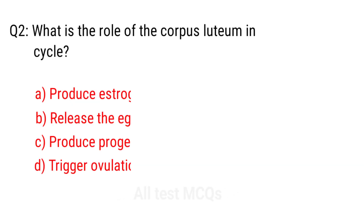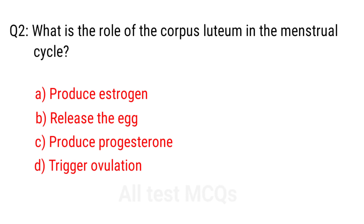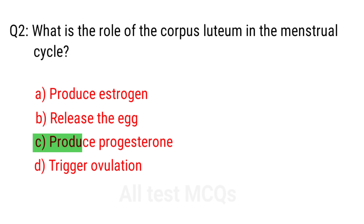Q2. What is the role of the corpus luteum in the menstrual cycle? The right answer is option C: Produce progesterone.